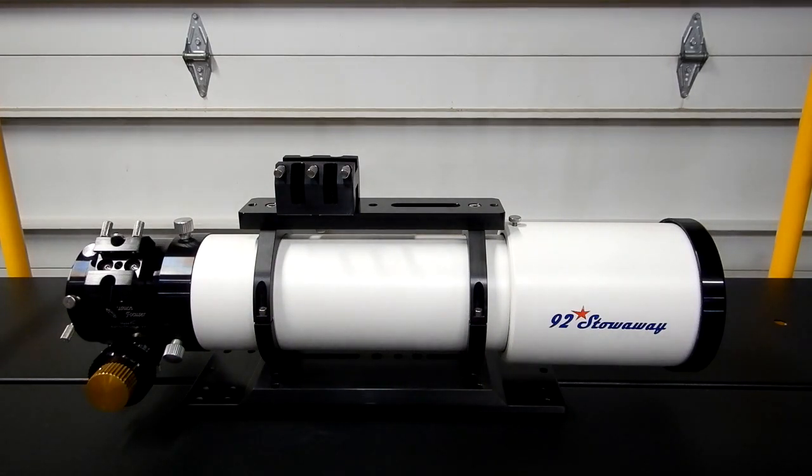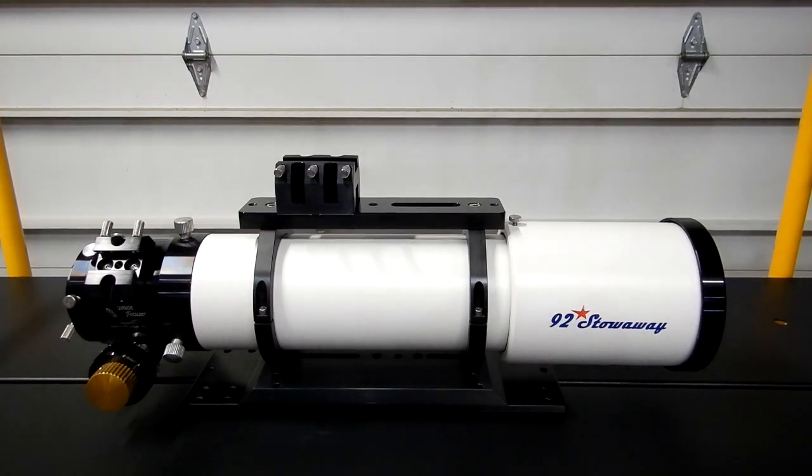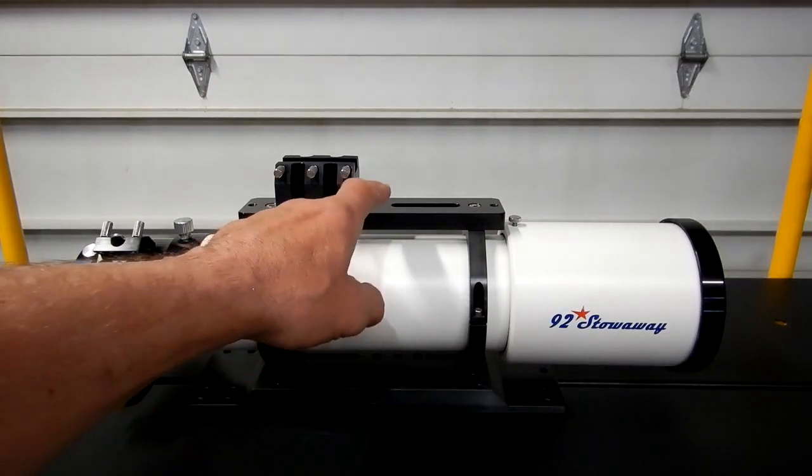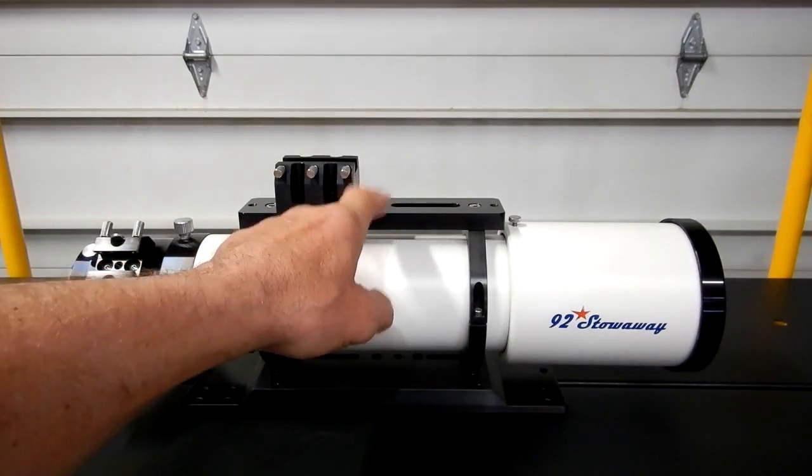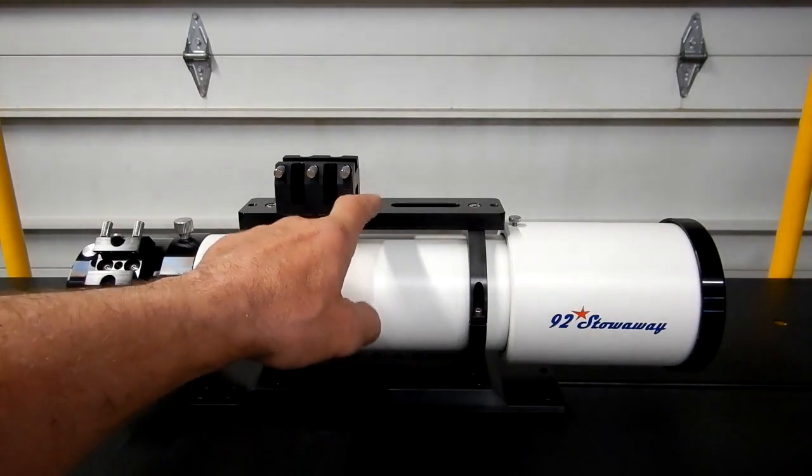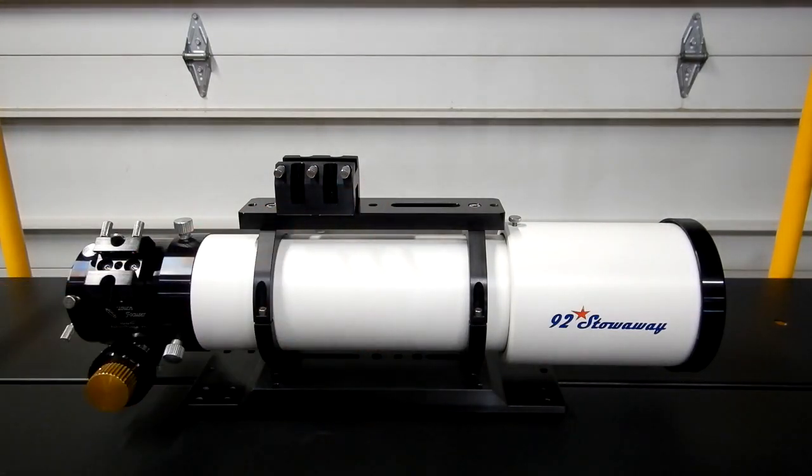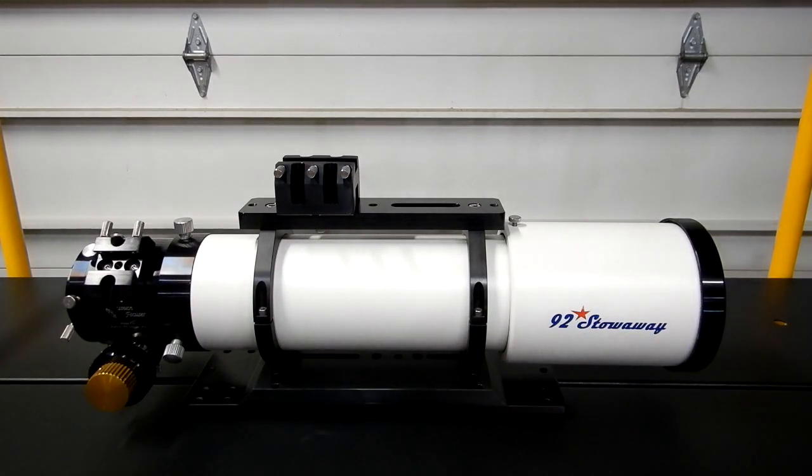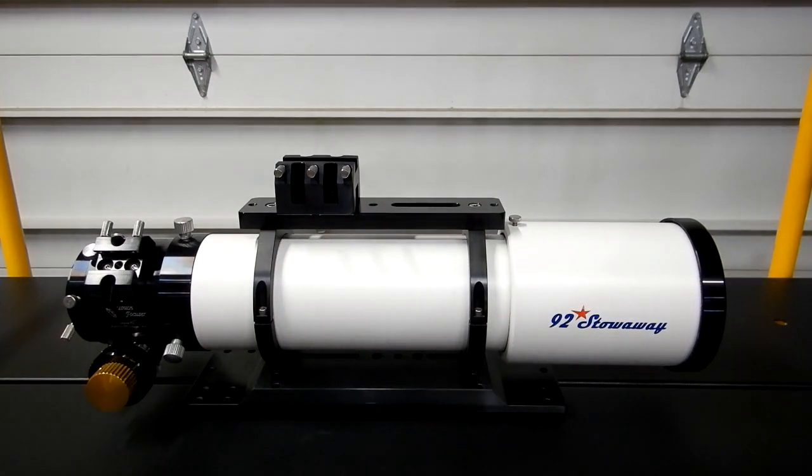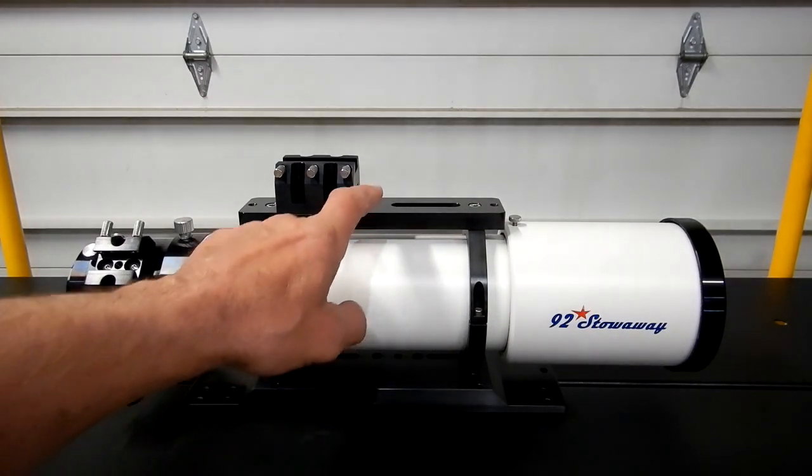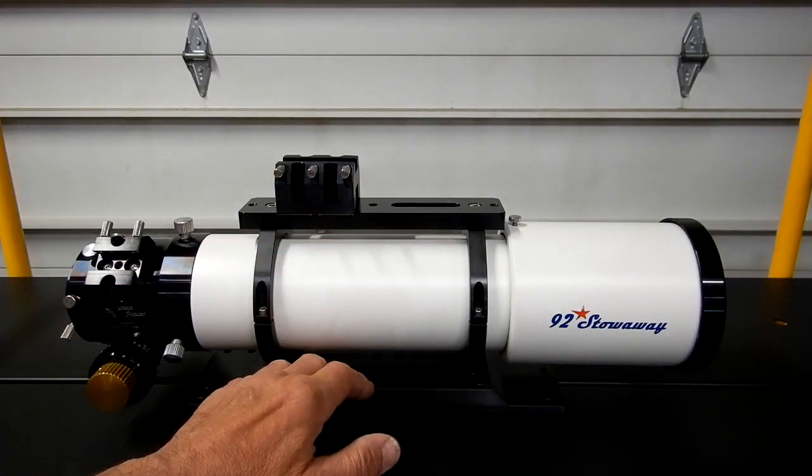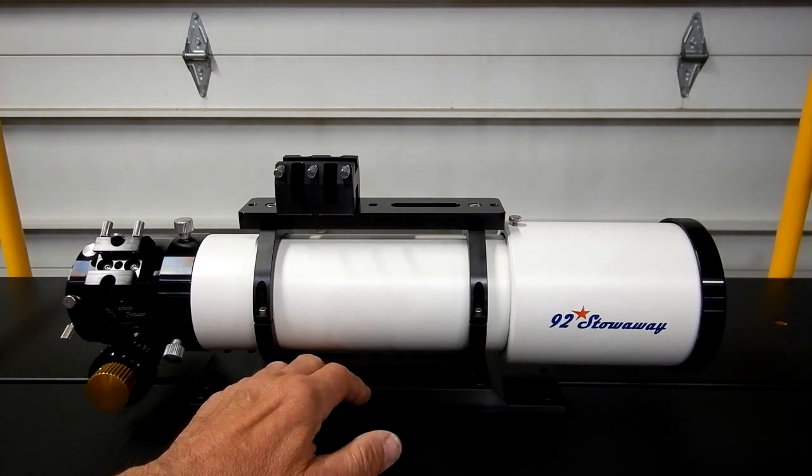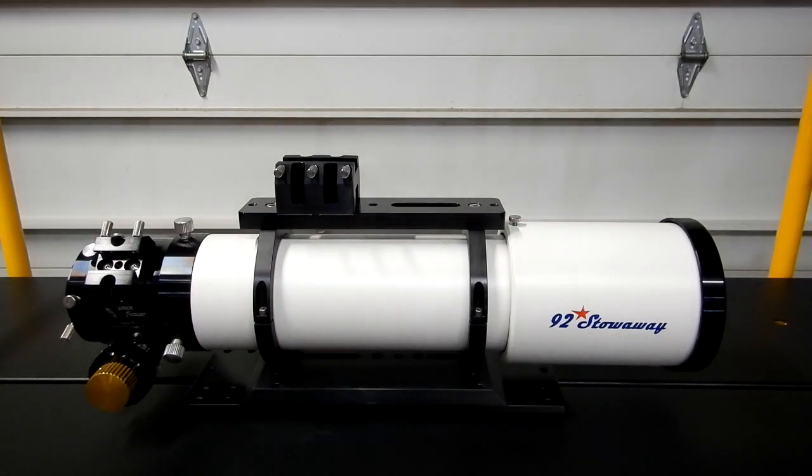Now this dovetail bar that you see here originally came on the bottom and came with the 92. It's the dovetail bar SBV08, an 8 inch Vixen style. What I've done is replaced the 8 inch Vixen that came on the bottom and I bought the dovetail plate the SBD12 and I'm using that.